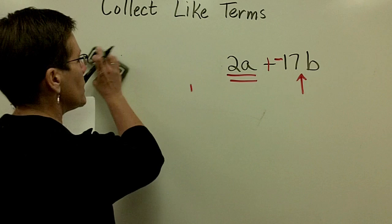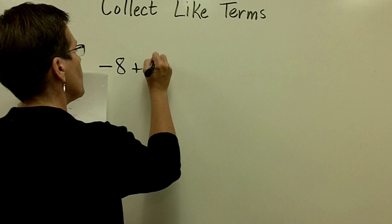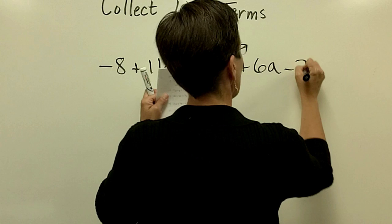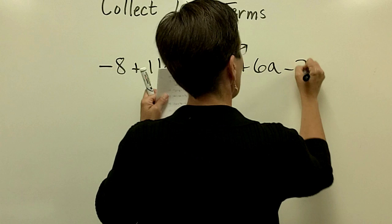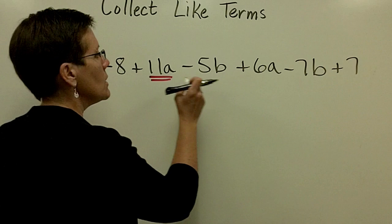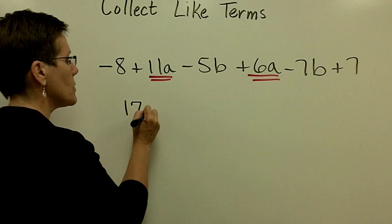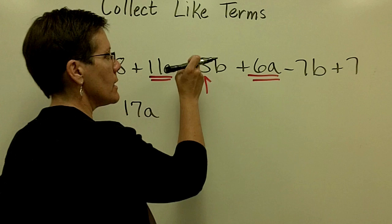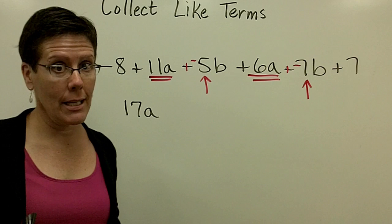Let's do another one with maybe 6 terms and maybe a quick fraction. So a negative 8 plus 11a minus 5b plus 6a minus 7b plus 7. I'm going to do this one fairly quickly. I'm going to do the a's first. So 11a plus 6a is 17 of those a's. Then I have a negative 5b and I have a negative 7b that I'm adding together. They have like signs, so I add their absolute values.